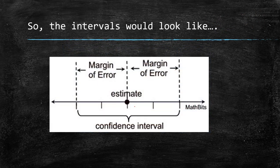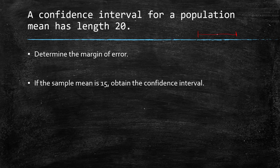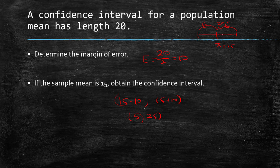So the intervals would look like this. We have our mean in the middle, so there's our x bar, and the margin of error is what we add and subtract to get the minimum and the maximum of our confidence intervals. So let's think about this. A confidence interval for the population mean has a length of 20. So the whole thing is 20. We know x bar is in the middle. So the margin of error we know is what we add and subtract. So half of 20 would be 10. That's our margin of error. So for sample mean is 15 and we know the margin of error is 10, to find the confidence interval we just take 15 minus 10 and then 15 plus 10. So that would just be 5 to 25.